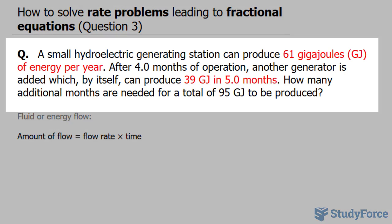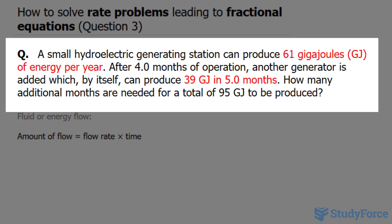The question reads: a small hydroelectric generating station can produce 61 gigajoules of energy per year. After four months of operation, another generator is added which, by itself, can produce 39 gigajoules in five months. How many additional months are needed for a total of 95 gigajoules to be produced?